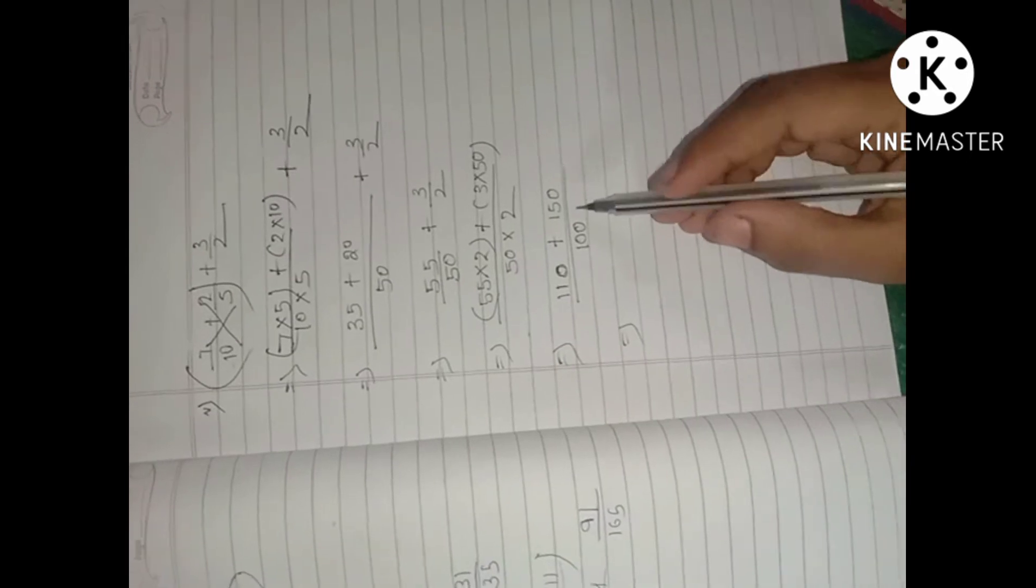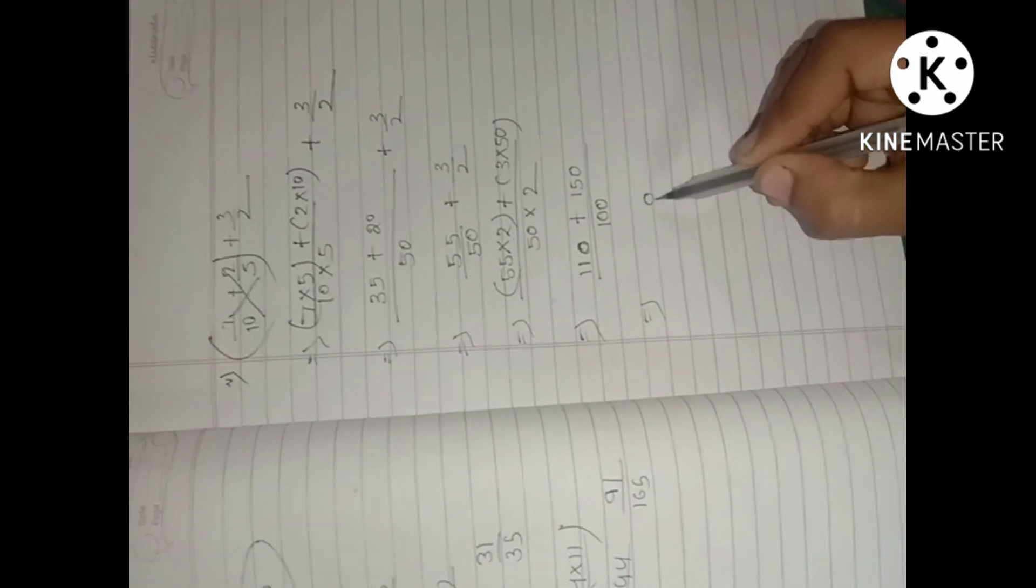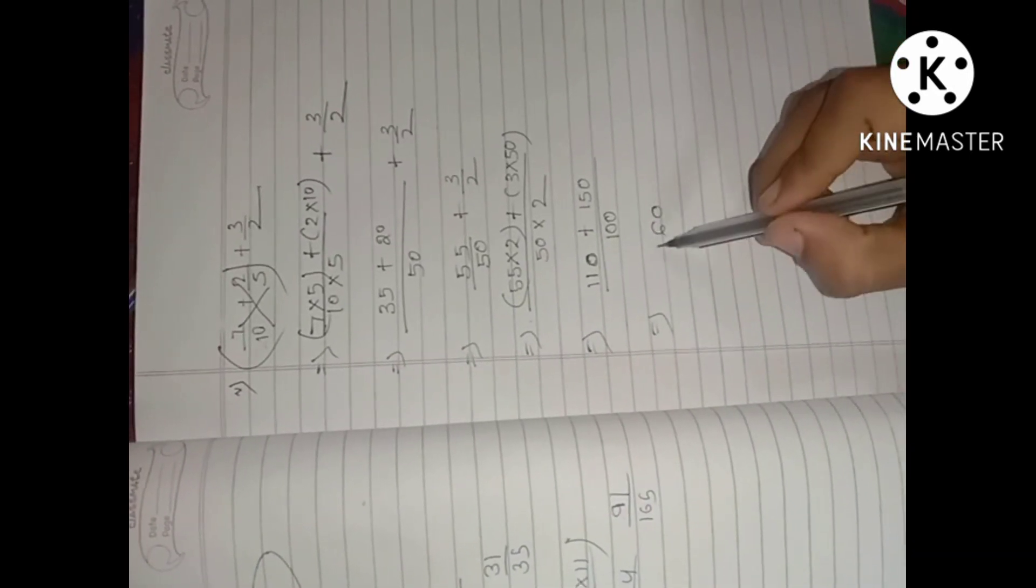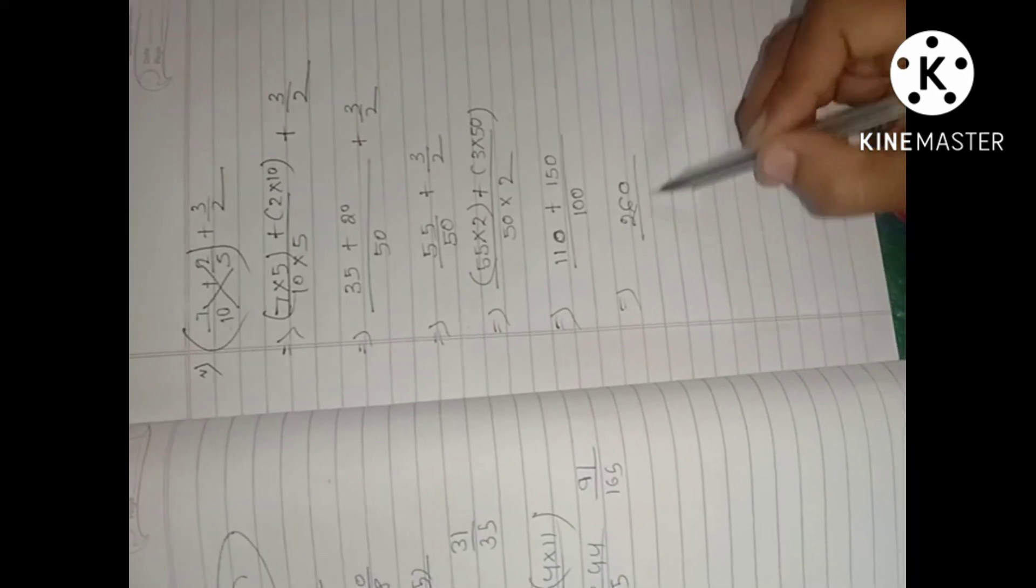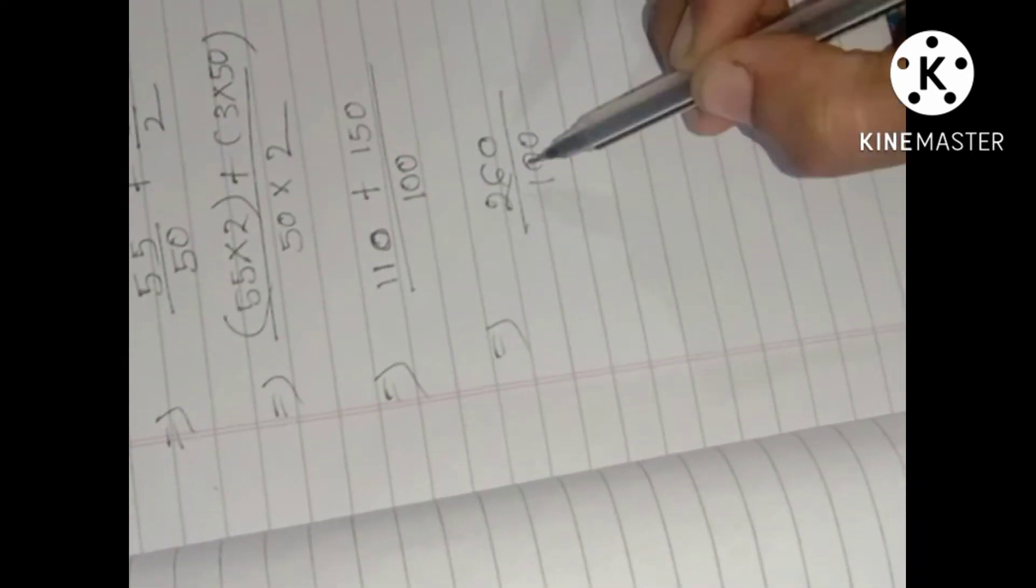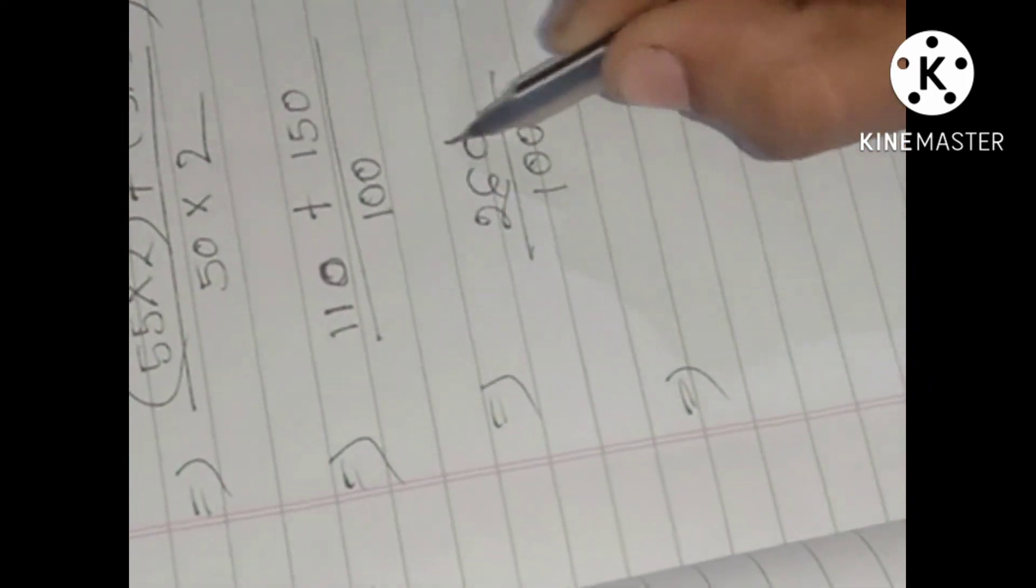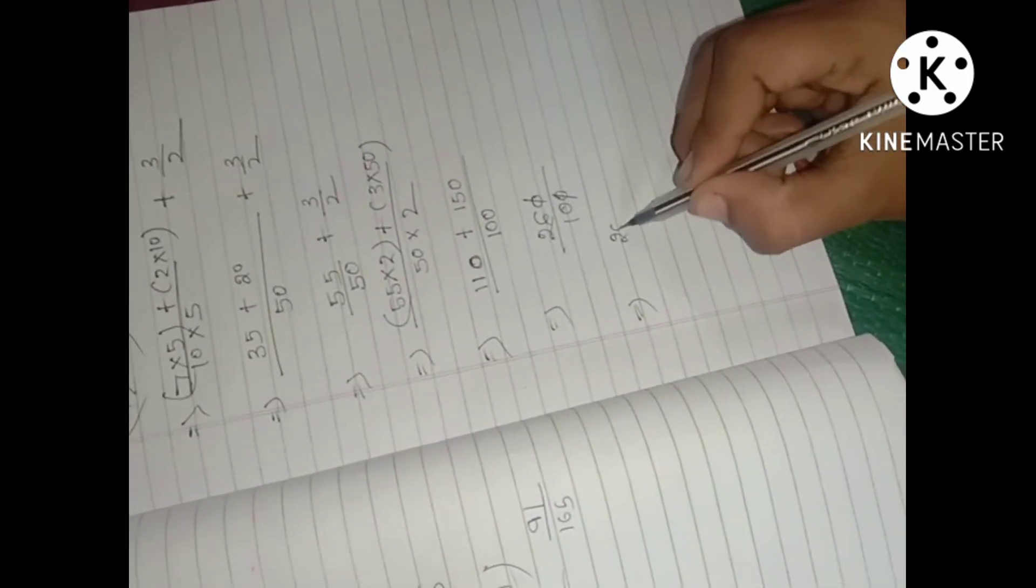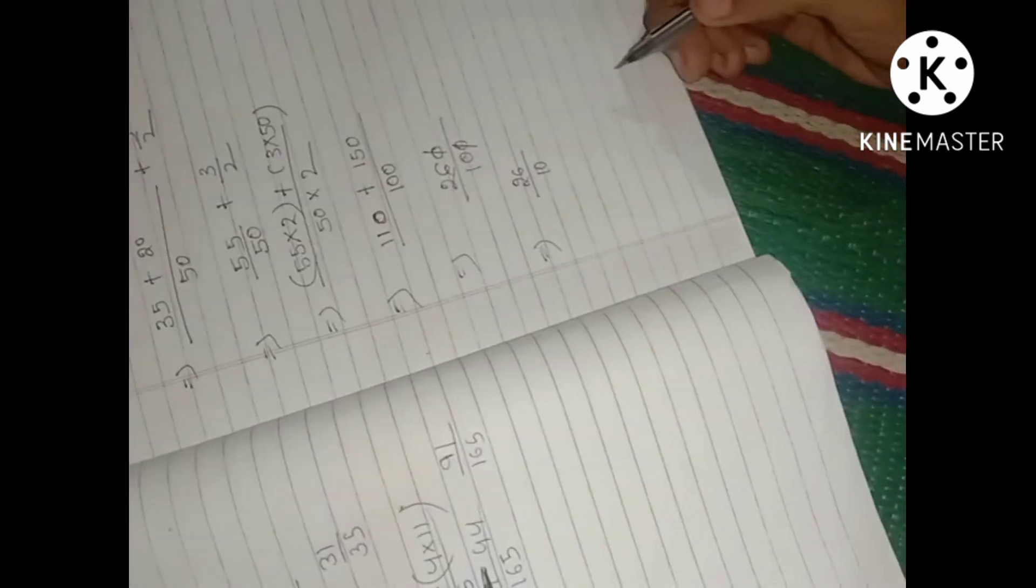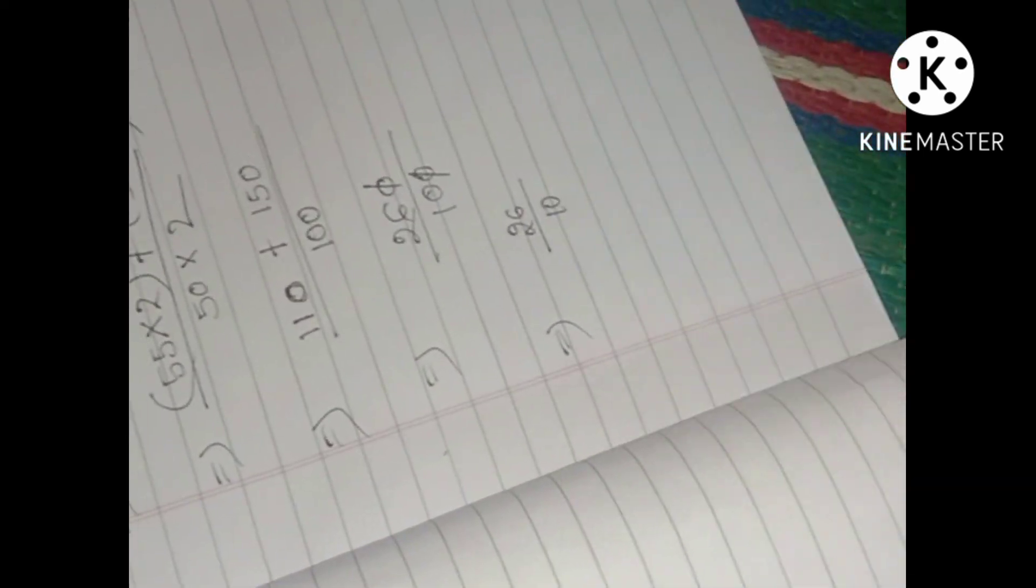110 plus 150 equals 260. 260 by 100. So this is how we cut 0 to 0. So this is 26 by 10.